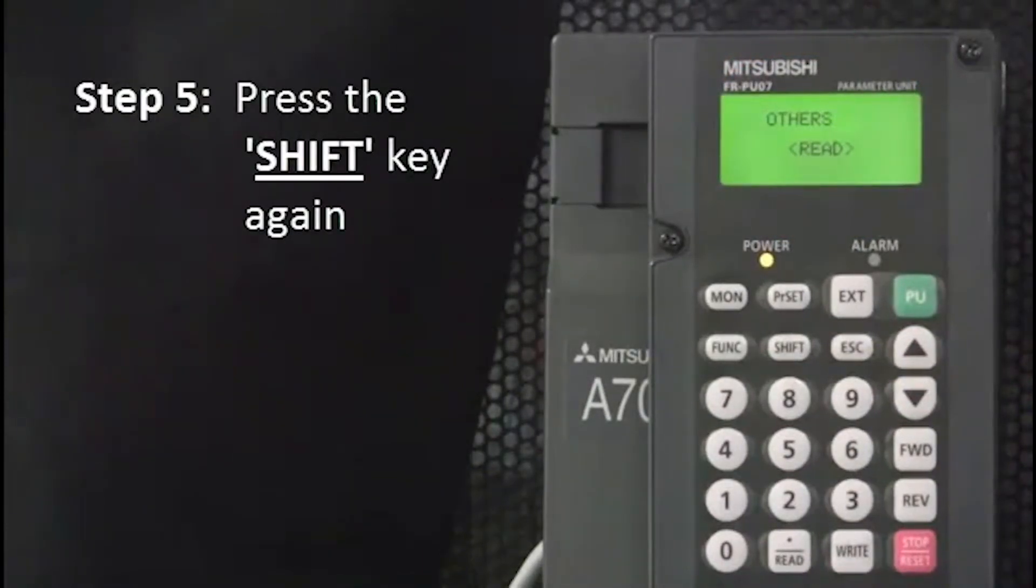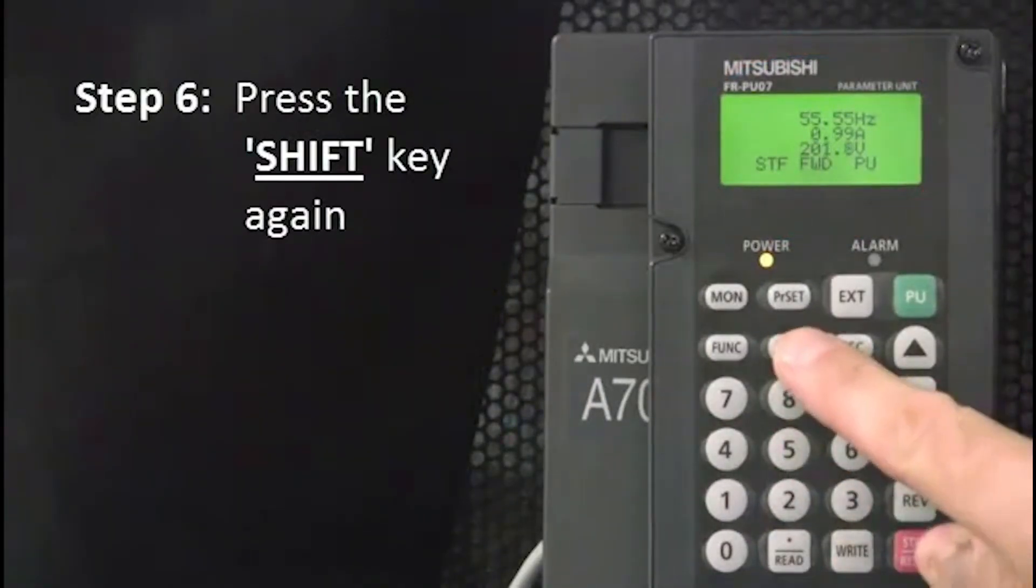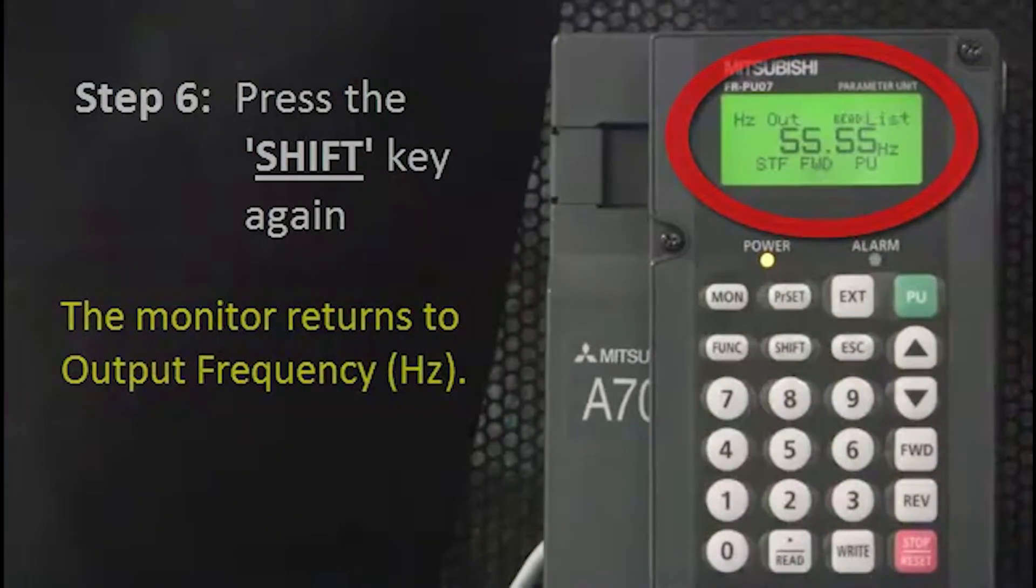Press the shift key again. The three-step monitor screen is shown. And finally, press the shift key again. The monitor returns to the output frequency in hertz.